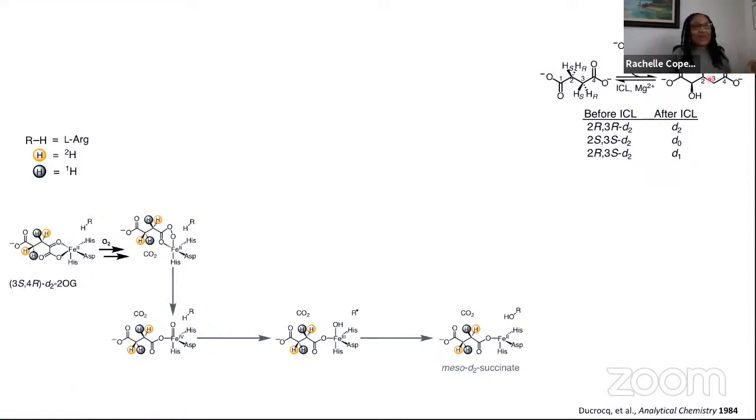It does this by exchanging only the pro-S hydrogens on succinate. The predictions that this allows us to make are that if we had deuteria at the pro-R positions, they wouldn't be exchanged, so we would end up with still D2 after incubation with isocitrate lyase. If we had SS dideutero succinate, both deuteria would be washed out to solvent, so we would end up with none. And then if we had RS, only one of the pro-S positions would be exchanged, leading to observation of D1 succinate. And that is in fact what we observe.